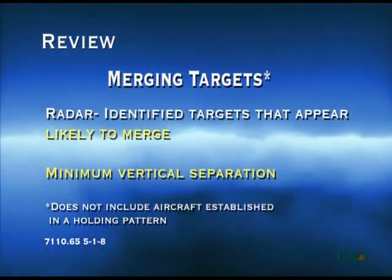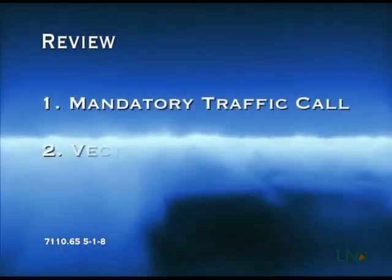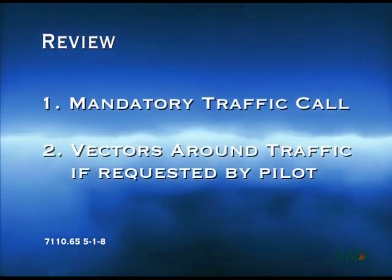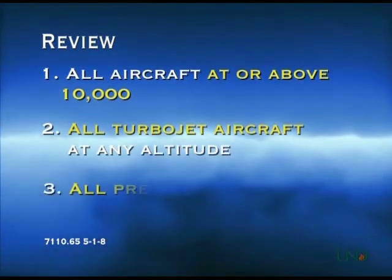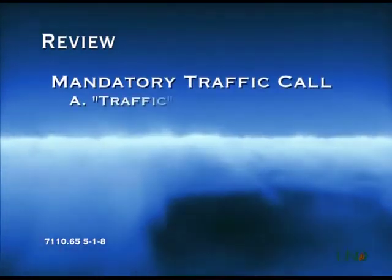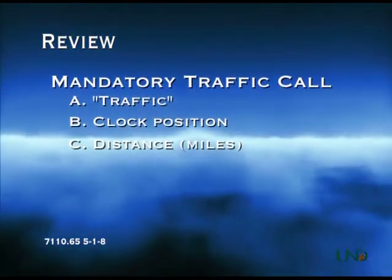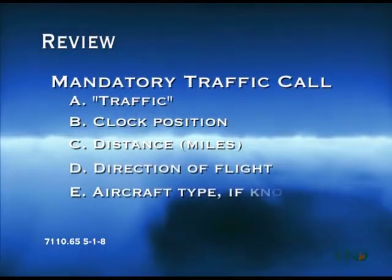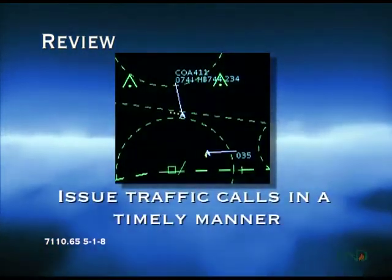Now for a quick review. Merging targets are defined as targets that appear likely to merge and are at the vertical separation minimum. Merging target procedures consist of two elements in the terminal radar environment: a mandatory traffic call and vectors if requested by the pilot. These procedures must be applied — unless the aircraft are established in a holding pattern — to all aircraft at or above 10,000 feet, all turbojet aircraft regardless of altitude, and all presidential aircraft regardless of altitude. The traffic call consists of: the word traffic, the location of the traffic relative to the aircraft, the distance, the traffic's direction of flight, the traffic's aircraft type and the word heavy if needed, and the altitude of the traffic. Traffic calls must be made in a timely fashion to allow the pilot to determine if a vector is necessary.